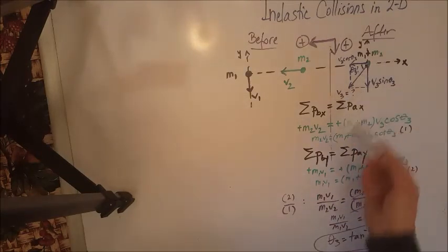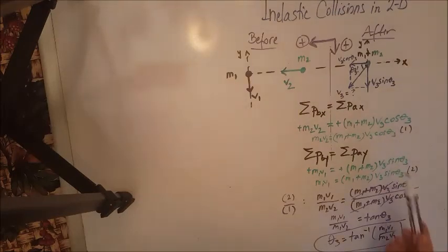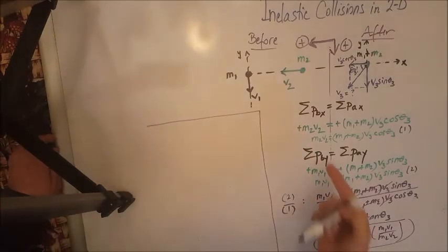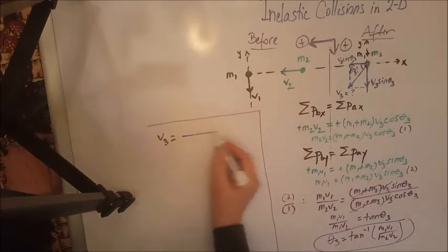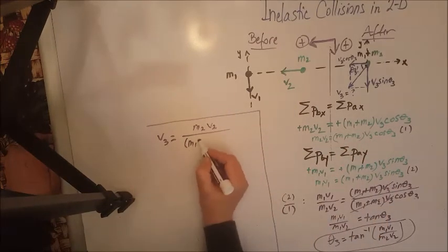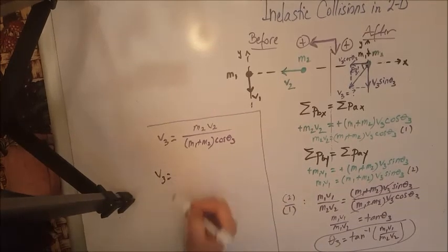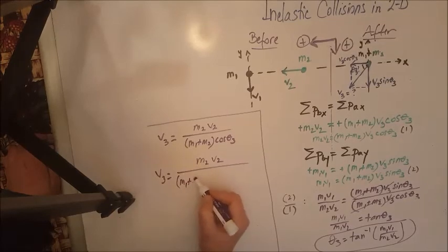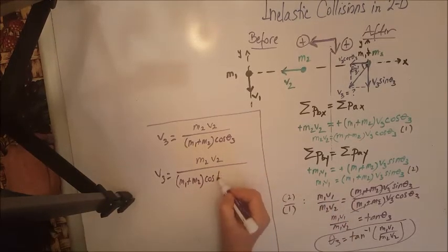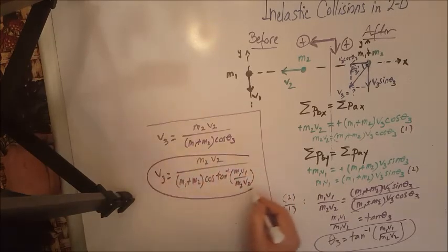The other unknown is V3. We take this theta 3 and substitute it into equation 1 and solve for V3. Solving gives V3 equals M2V2 divided by (M1 + M2) times cosine of theta 3. Substituting theta 3 gives the final answer: V3 = M2V2 / [(M1 + M2) · cos(arctan(M1V1 / M2V2))].